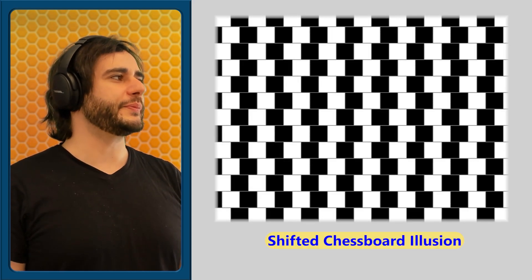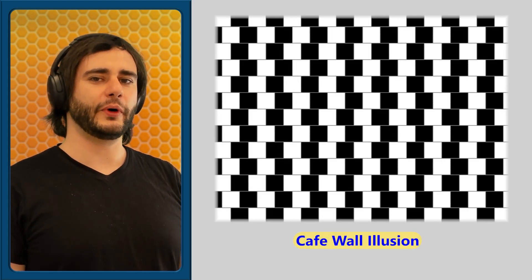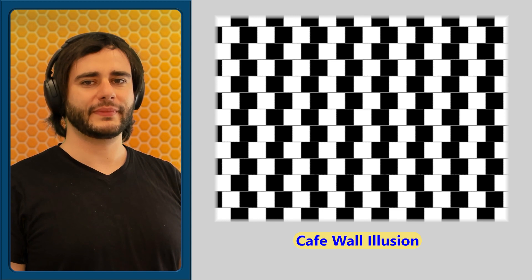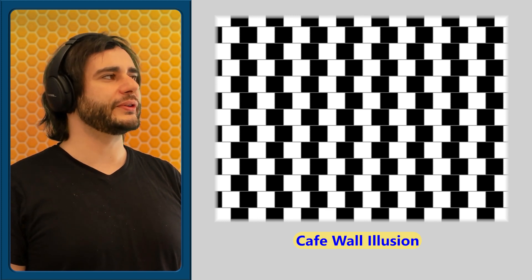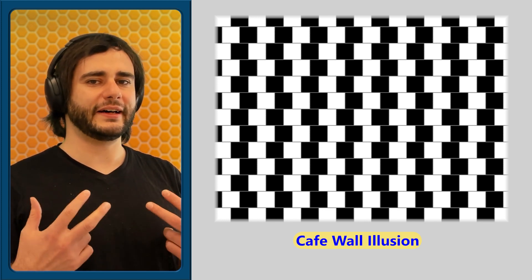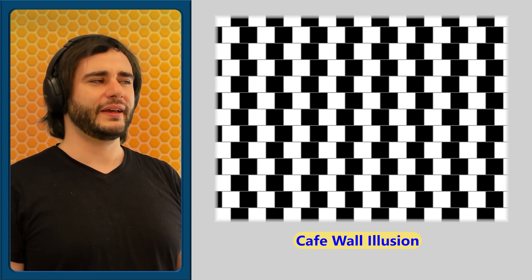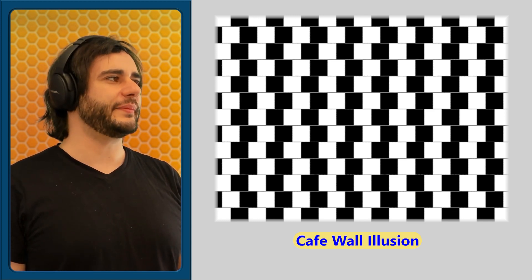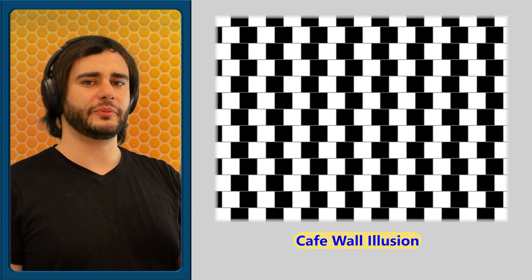This is the shifted chessboard illusion, also known as the cafe wall illusion. All lines here are horizontal or vertical, but we — or at least I — don't see them that way at all. They're slanted somehow, kind of zigzagging from top to bottom.